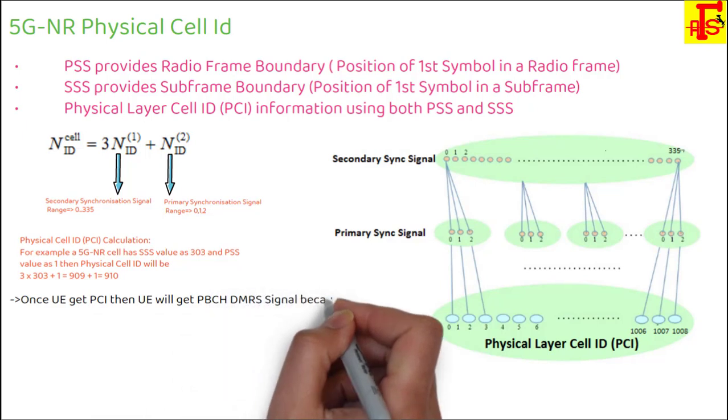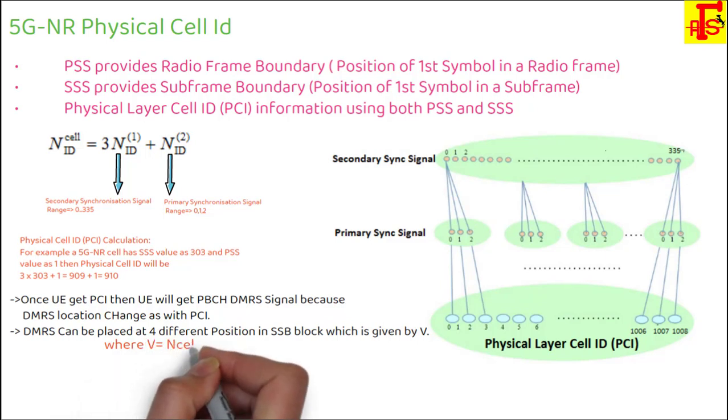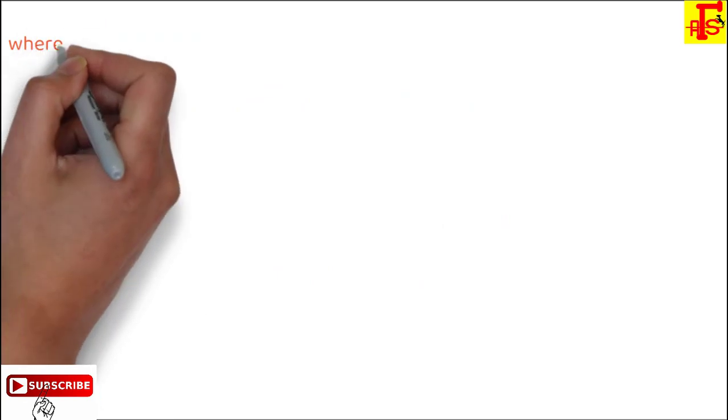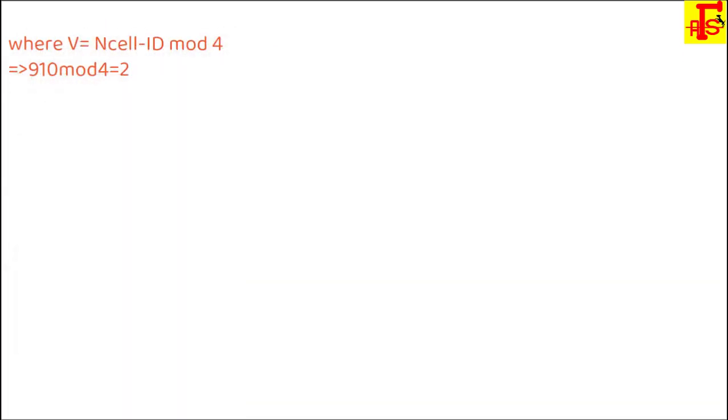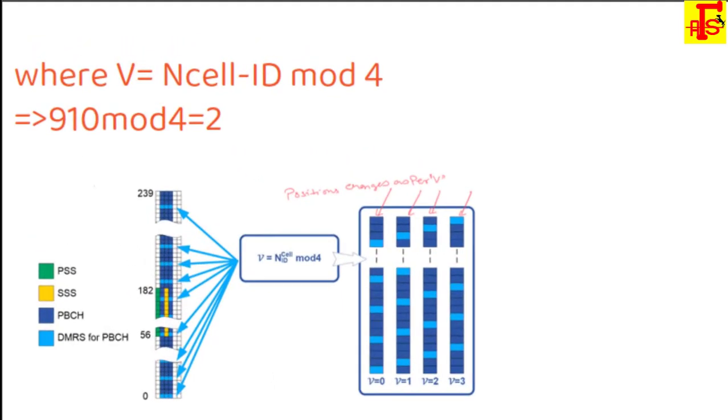DMRS can be placed at 4 different positions in SSB block, given by V. The V formula is NID_cell mod 4. Physical cell ID is 910, so 910 mod 4 equals 2, then V equals 2. In this pattern of DMRS, the signal location changes as per PCI. V can be 0, 1, 2, or 3. For V equals 2, this will be the DMRS location. The DMRS signal will be allocated for this physical cell ID.